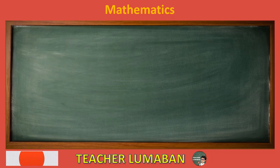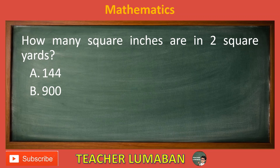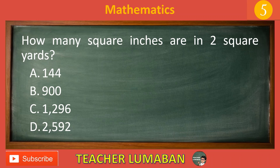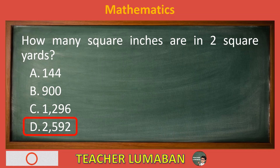How many square inches are in two square yards? Letter A: 144. Letter B: 900. Letter C: 1296. Letter D: 2592. The correct answer is Letter D: 2592. The number of square inches in two square yards is 2592.